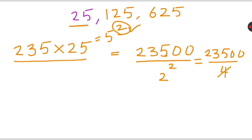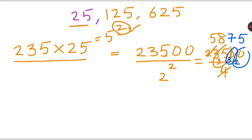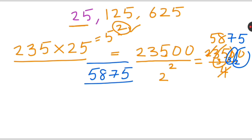Dividing 23500 by 4: 4 times 5 is 20, remainder 3; then 35 — 4 times 8 is 32, remainder 3; then 4 times 7 is 28, remainder 2; then 4 times 5 is 20. So 235 times 25 equals 5875. Without doing any multiplication, we can write the answer directly.